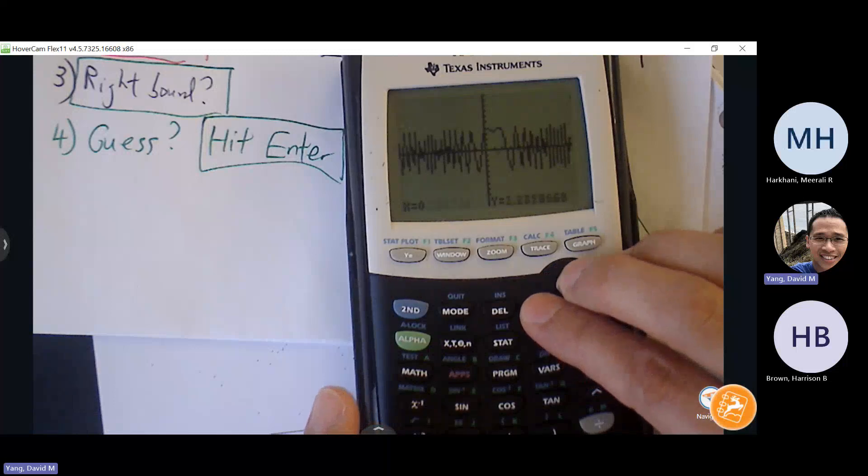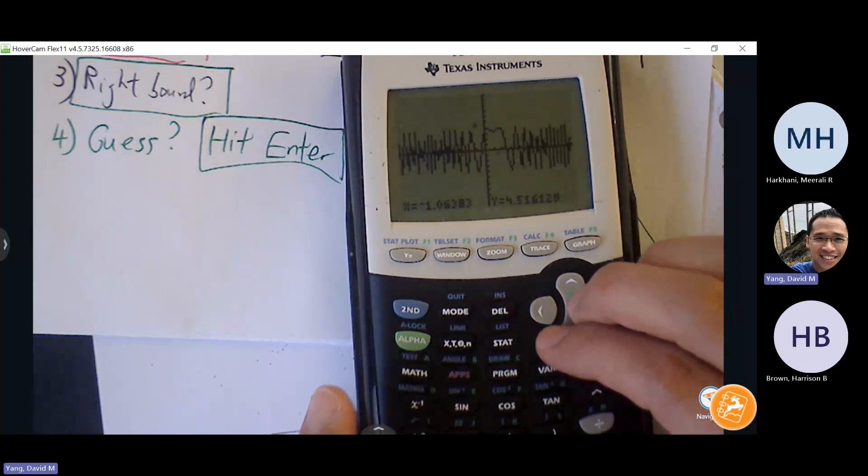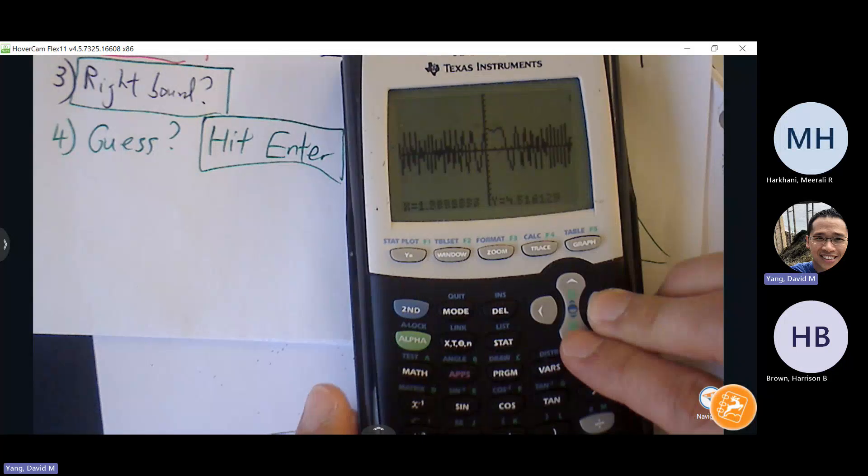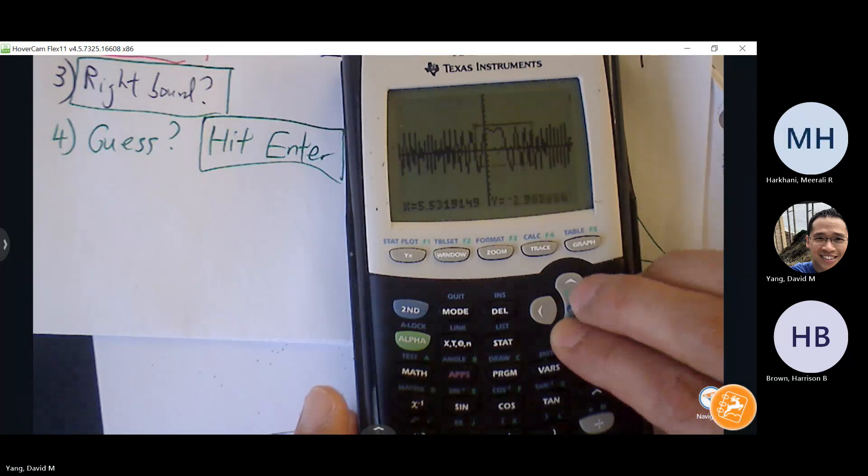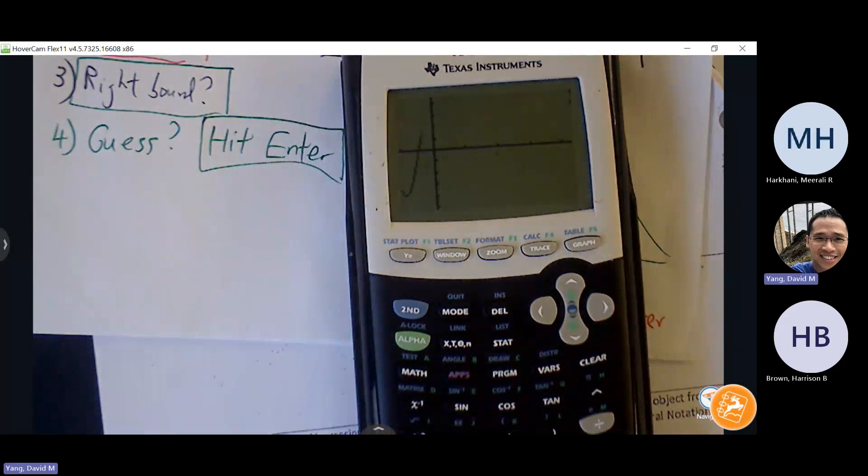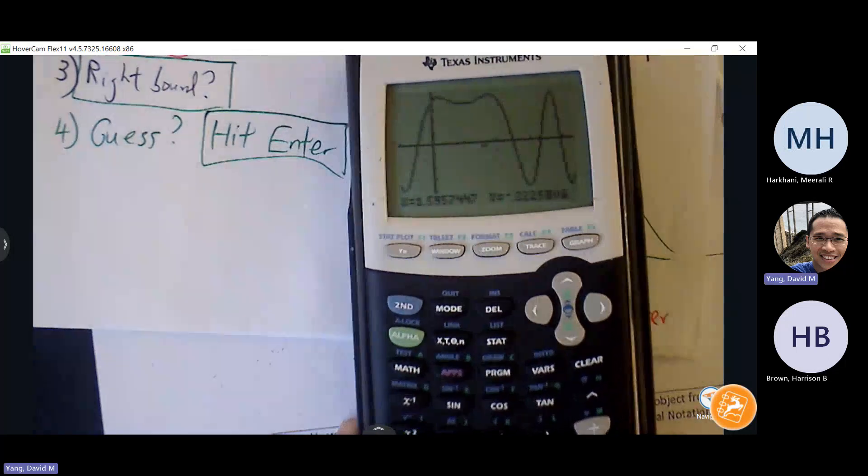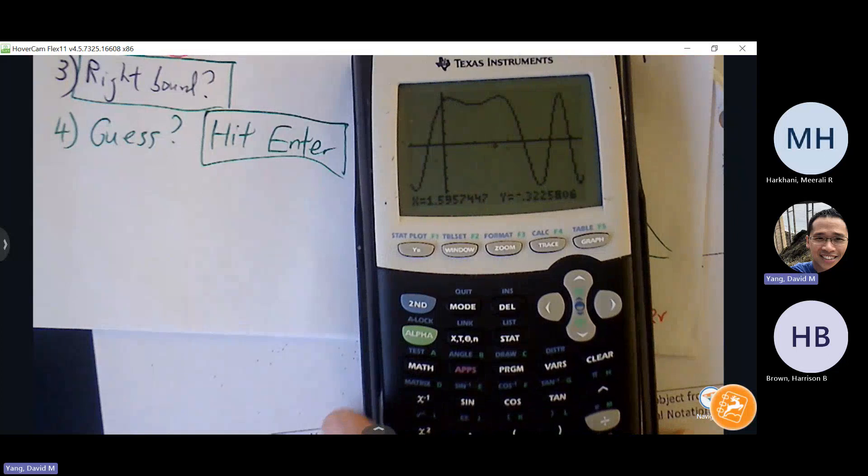Sometimes you may have to scroll to see where that blinking cursor is and then once you hit enter. Sometimes students want to hit enter before they see the box, so make sure you see the box first before you hit enter. And then you're good with finding X intercepts? Yeah, second trace, up and down.